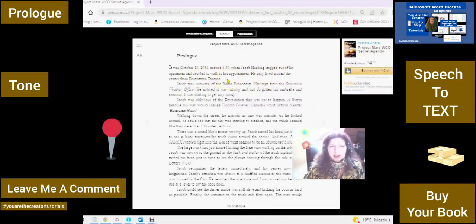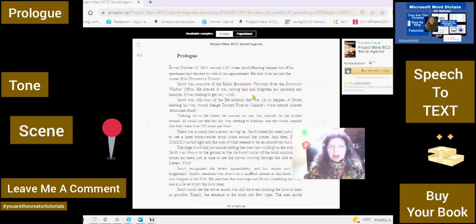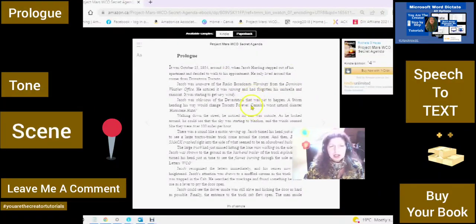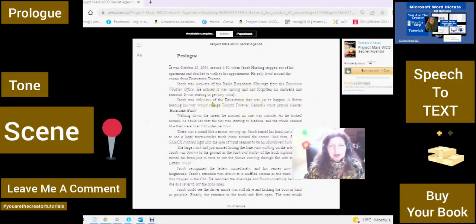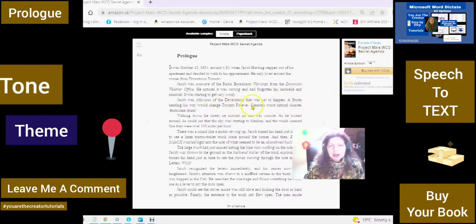He only lived around the corner from downtown Toronto. So here I am setting the scene. Jacob was unaware of the radio broadcasts warning from the Dominion Weather Office. He noticed it was raining and he had forgotten his umbrella and raincoat. It was starting to get very windy. Jacob was oblivious of the devastation that was yet to come. And here I am setting the tone. A storm heading his way would change Toronto forever. Canada's worst natural disaster, Hurricane Hazel.